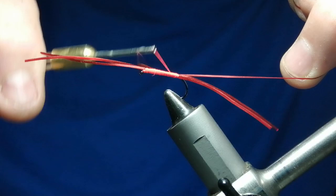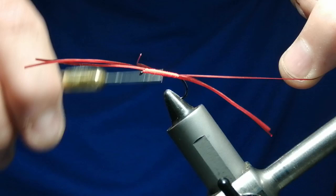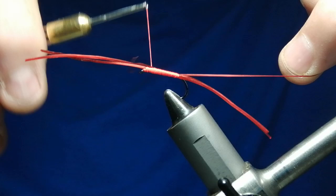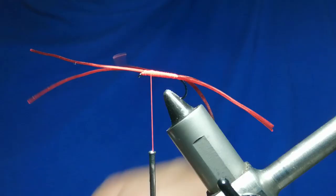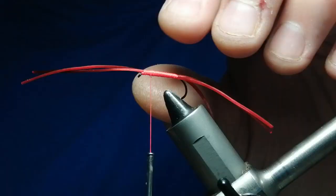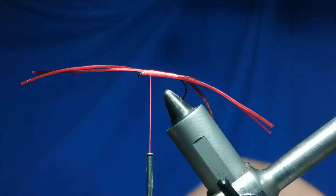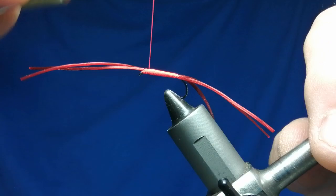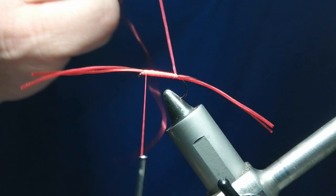And then that'll create your body. And when you get up towards where you've tied it in, you can then snip that off. And then this is the part we're going to use for the rib, so we'll just put that over there out of the way. Don't need all that.